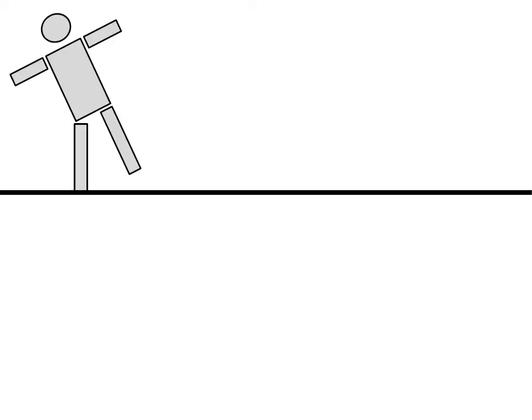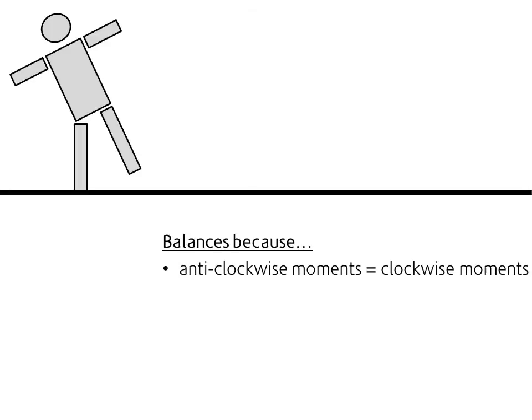So if we look at stability, let's consider a person. If you go up on one leg then you tend to naturally lean, put your foot out the opposite way. The reason you balance is because of moments. Your anti-clockwise moments, so the turning effect anti-clockwise, equals the turning effect clockwise. And if you remember, a moment is equal to the force times the distance from the pivot.